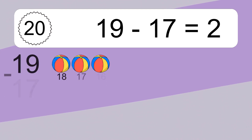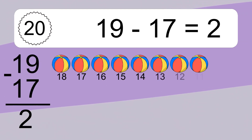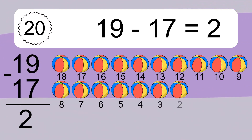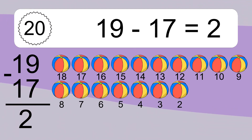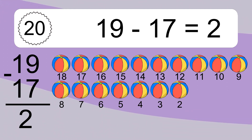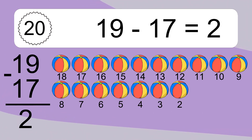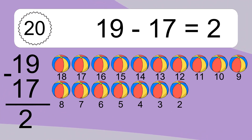Nineteen minus seventeen equals what? Nineteen minus seventeen equals two. Let's count it: eighteen, seventeen, sixteen, fifteen, fourteen, thirteen, twelve, eleven, ten, nine, eight, seven, six, five, four, three, two.